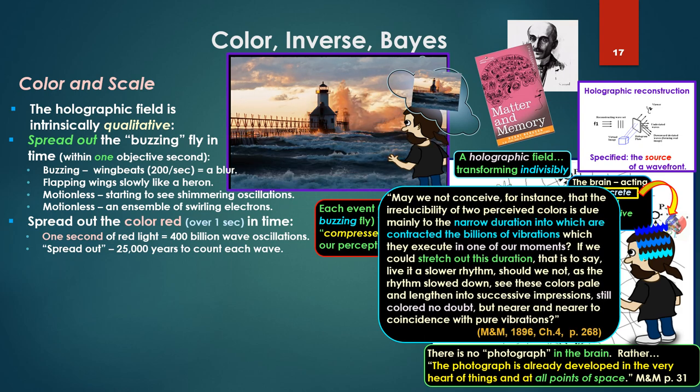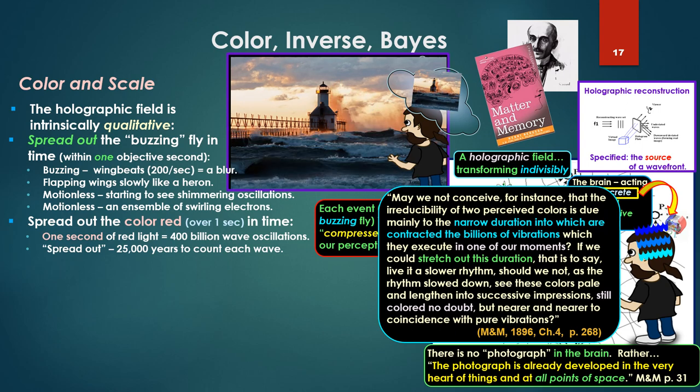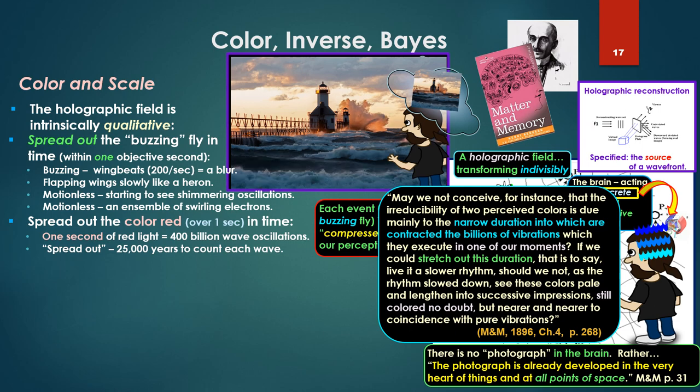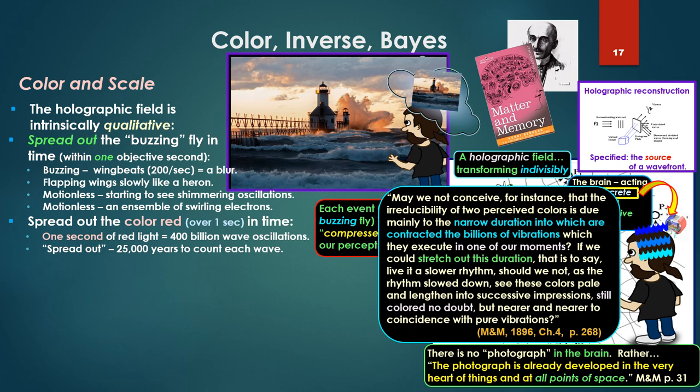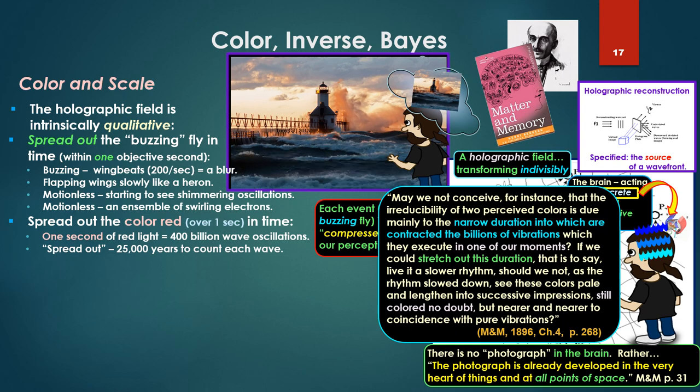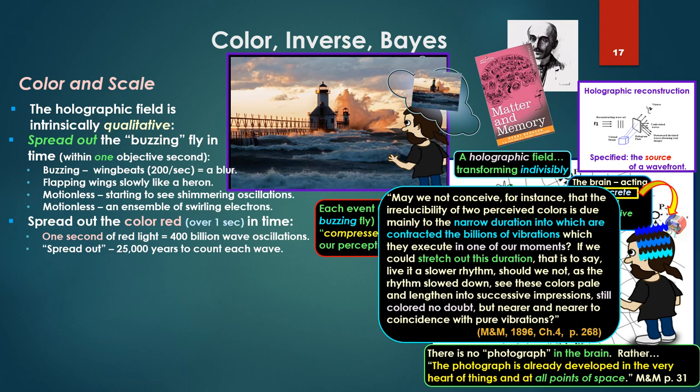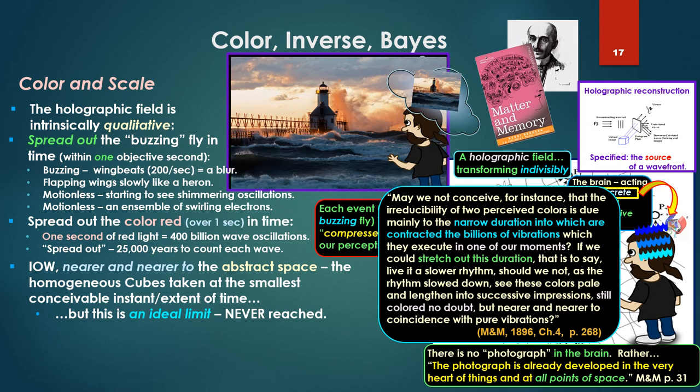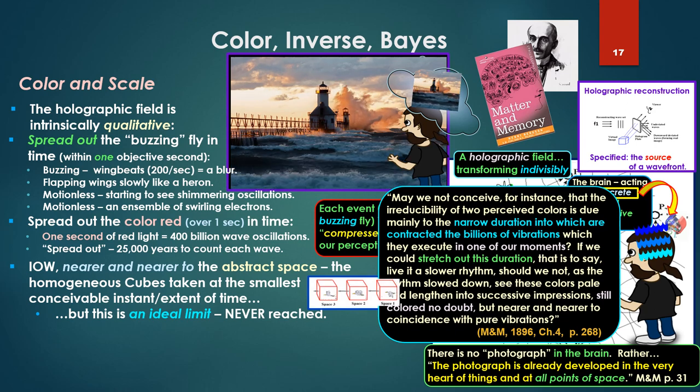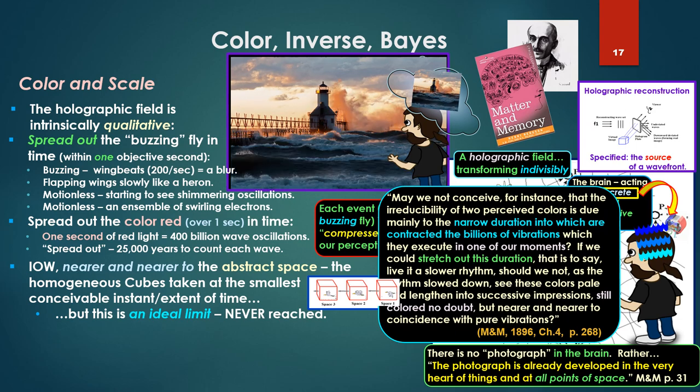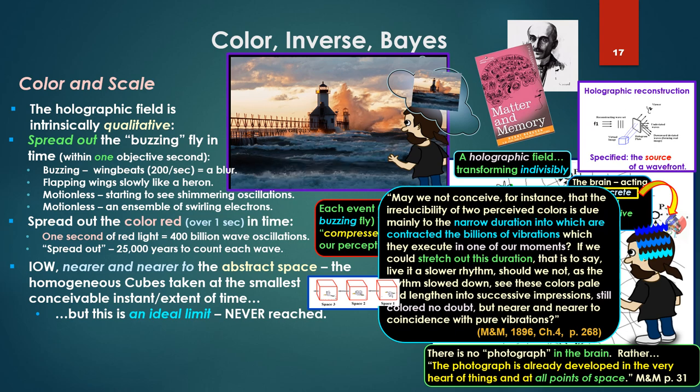So to quote Bergson from Matter and Memory: May we not conceive, for instance, that the irreducibility of two perceived colors is due mainly to the narrow duration into which are contracted the billions of vibrations which they execute in one of our moments? If we could stretch out this duration, that is to say live it at a slower rhythm, should we not, as the rhythm slowed down, see those colors pale and lengthen into successive impressions, still colored no doubt, but nearer and nearer to the coincidence with pure vibrations? In other words, nearer and nearer to a coincidence with the abstract space, the completely homogeneous cubes taken at the smallest conceivable instant of time where all quality has been stripped. But never quite reaching this, because this is an ideal limit never reached. That's the key, it's never reached.